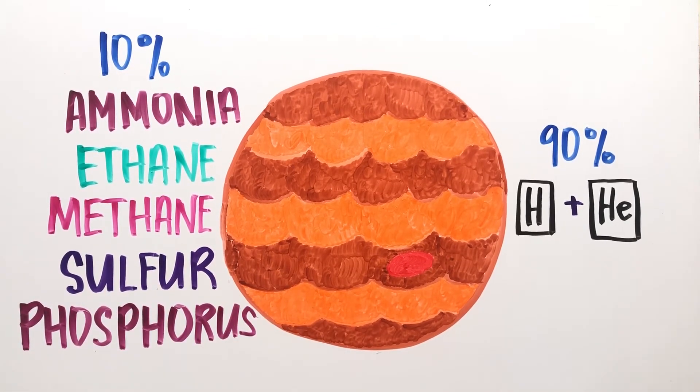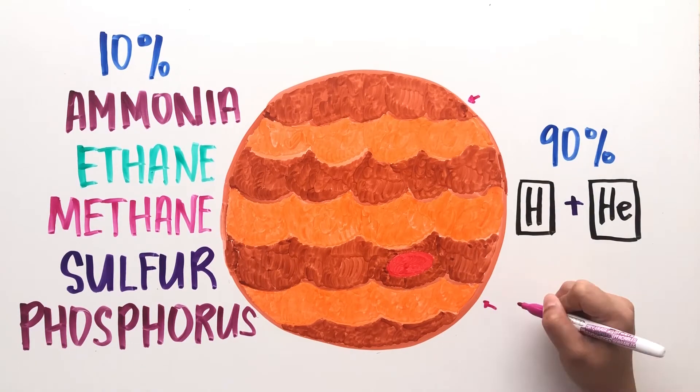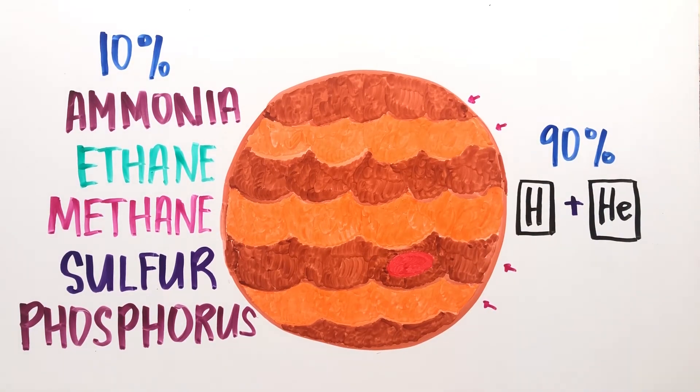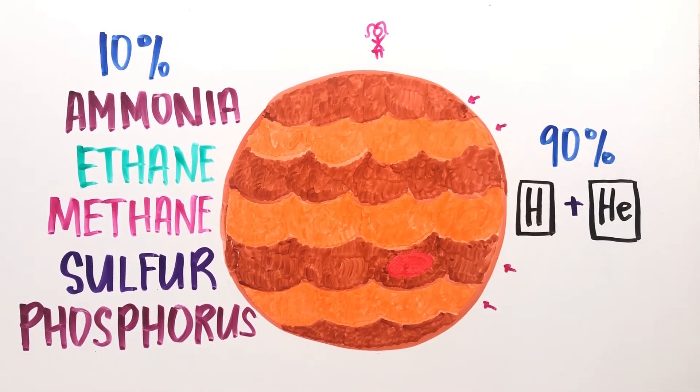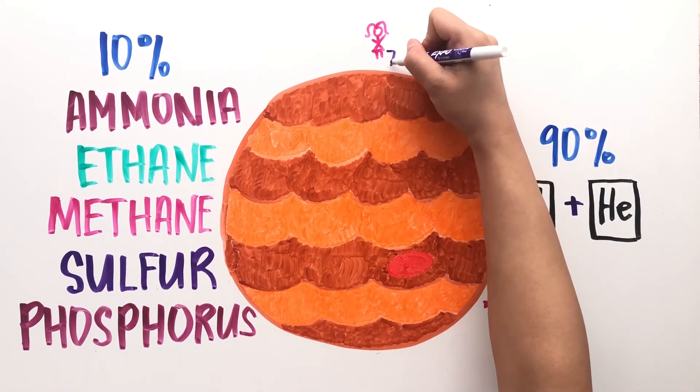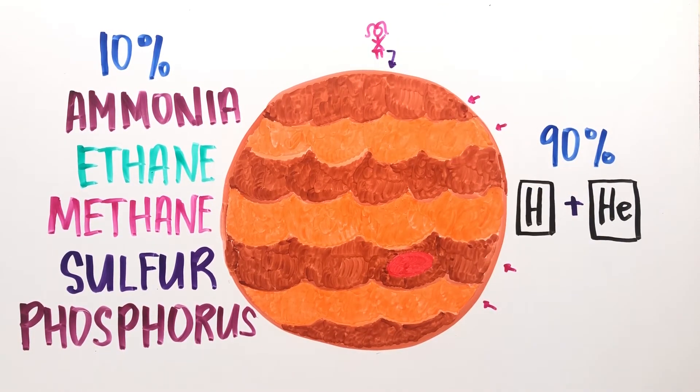These gases pile up on top of each other, creating layers that reach all the way to its core. Standing on its surface would be impossible. You would continue to descend downward to its core until the pressure of the planet takes over.